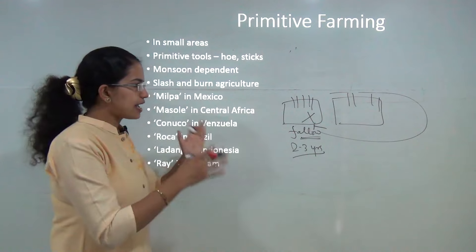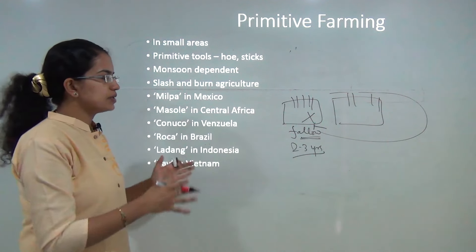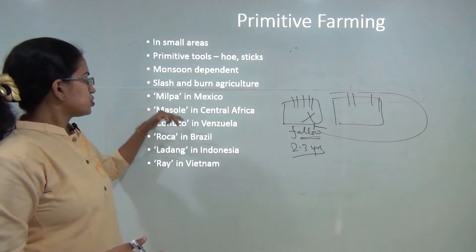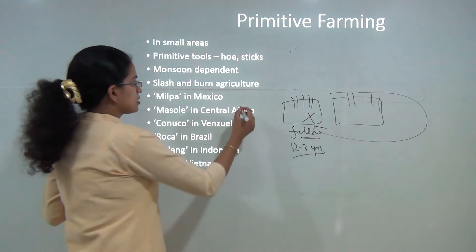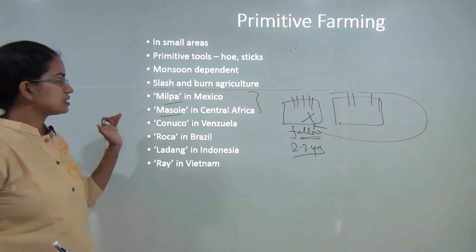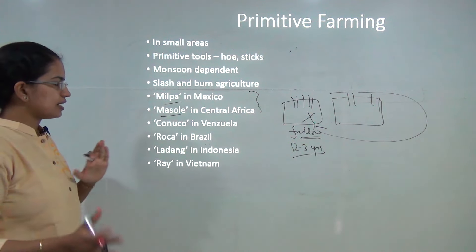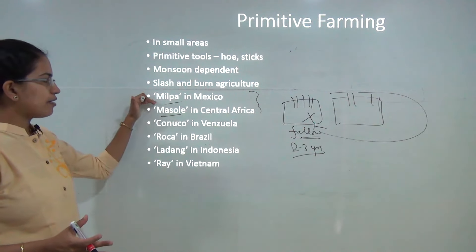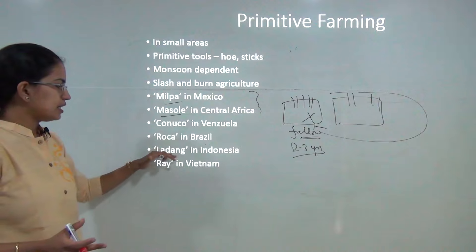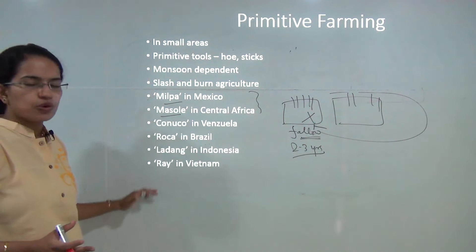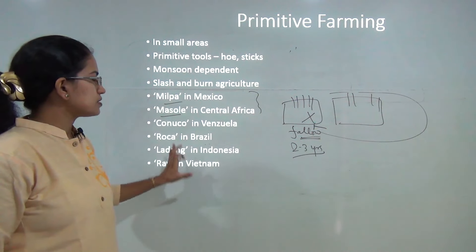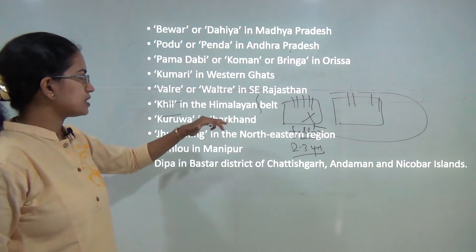Slash and burn agriculture is known by various names in various parts of the world. For Mexico and Central Africa, both names start with M — Milpa in Mexico and Masalo in Central Africa. You have Roka in Brazil, Ladang in Indonesia, and so on. All these international names you must remember.